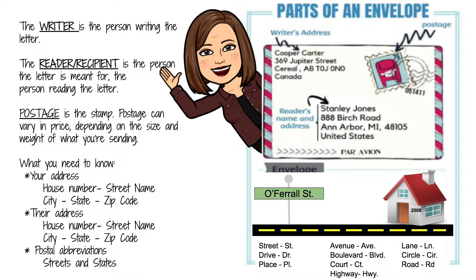Okay so let's talk about the parts of an envelope really quick. There are three main things on an envelope. You have the writer's address, which is also called the return address. You have the reader's address or the recipient's address, and then you have to put postage on it. Now the writer is the person that is writing the letter, and in this case it's going to be you.